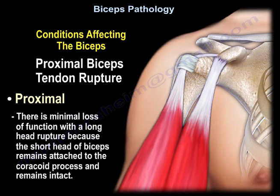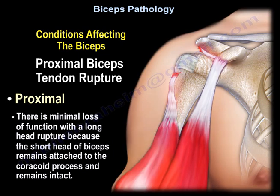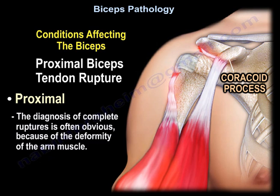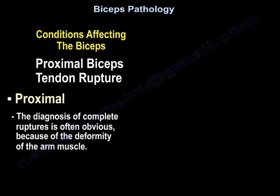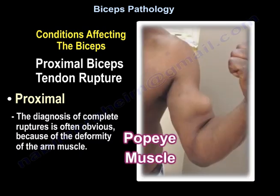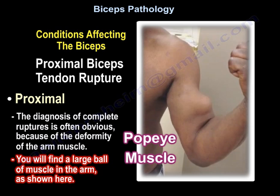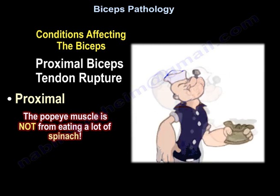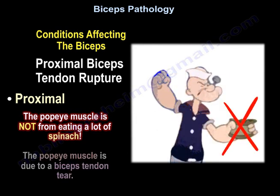With proximal biceps tendon rupture, there will be minimal loss of function because although the long head of the biceps ruptures, the short head remains attached to the coracoid process. The diagnosis is often obvious for complete ruptures because of the deformity of the arm muscles — you will find a big ball of muscle in the arm, as seen in this picture. The Popeye muscle is not from eating spinach; it is due to a biceps tendon tear.